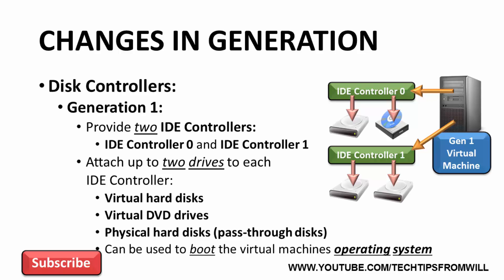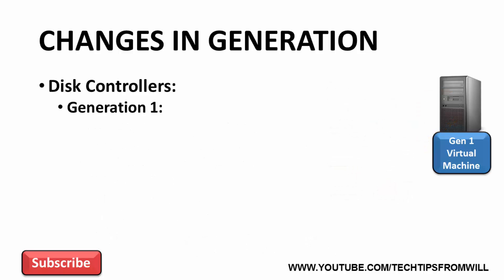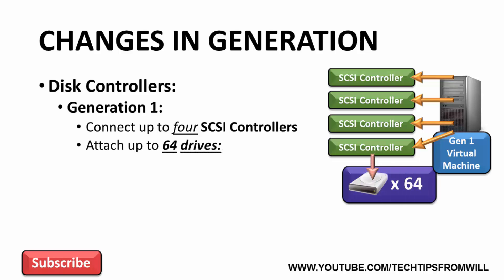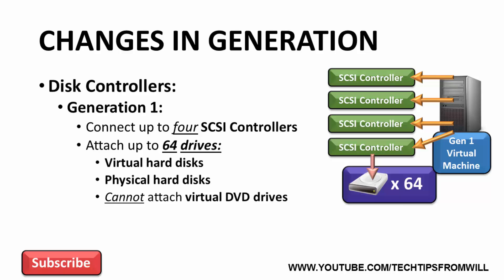In addition, Generation 1 virtual machines allow you to connect up to four SCSI controllers, each of which can have up to 64 drives connected. However, these devices are limited to just virtual hard disks and physical hard disks. You can't attach virtual DVD drives, nor can you boot an operating system from a SCSI controller. SCSI controllers simply allow the administrator to attach additional data drives to the virtual machine.